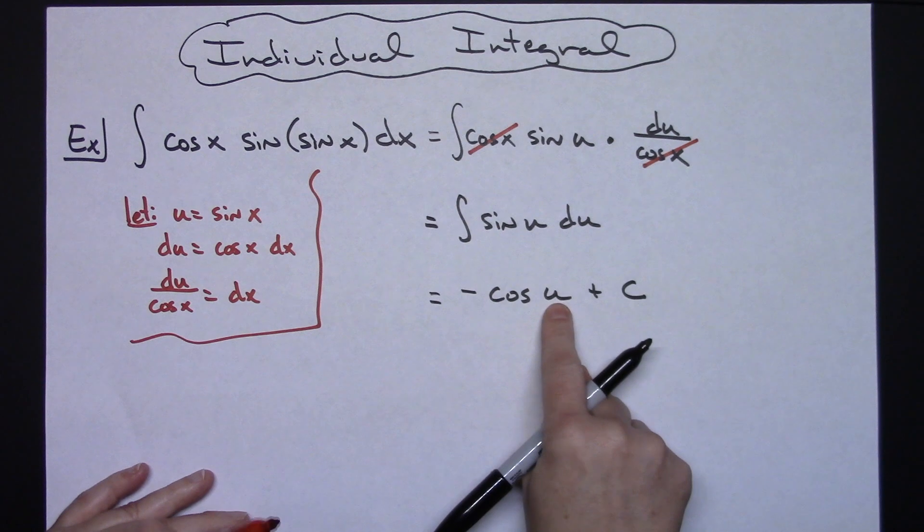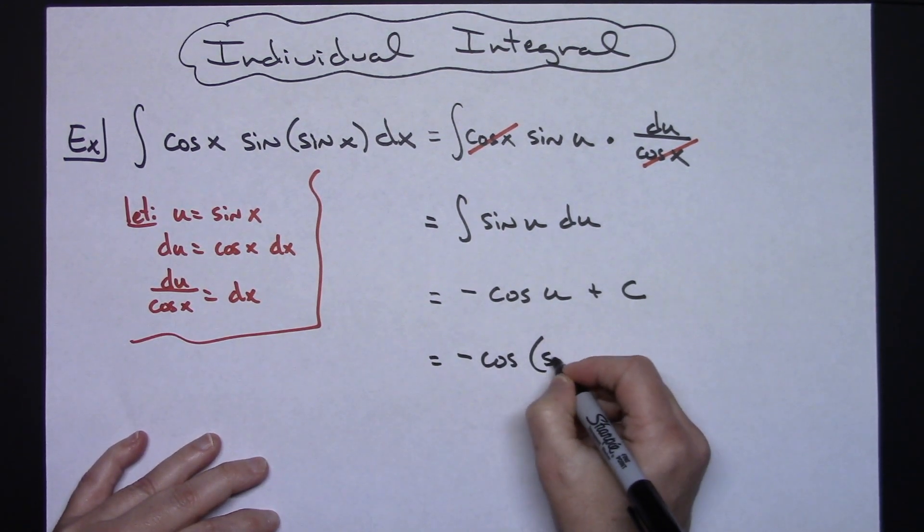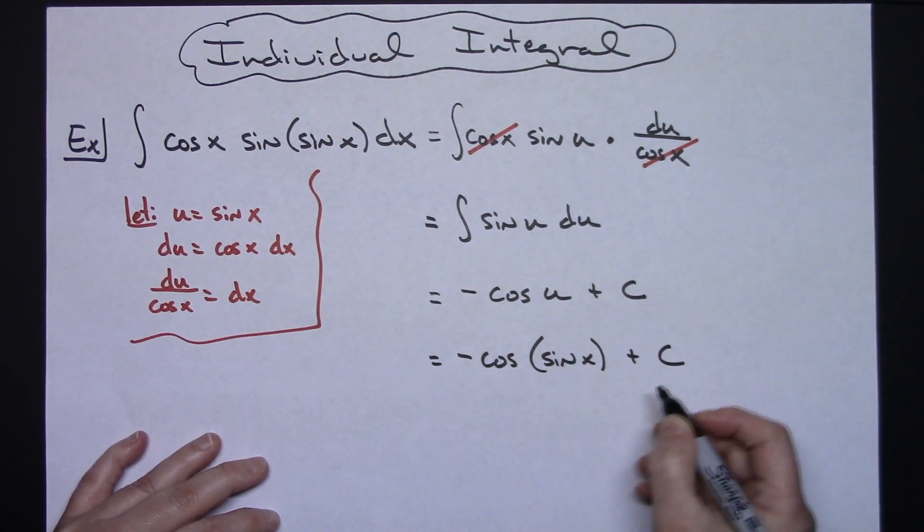And then we need to replace u with what it equals. So we'll have a negative cosine sine x plus c.